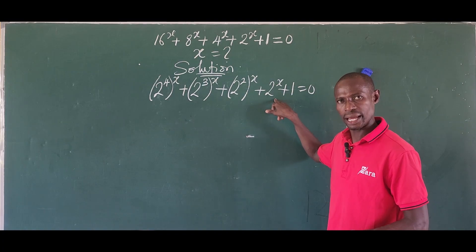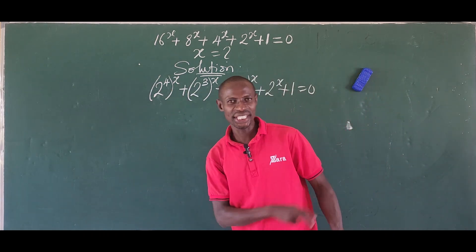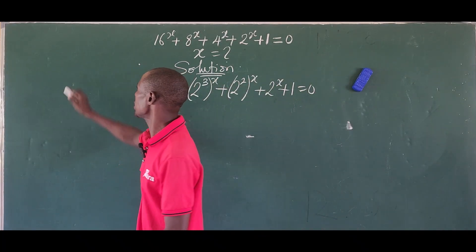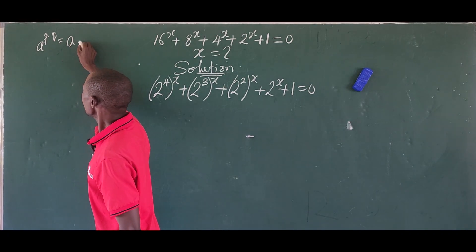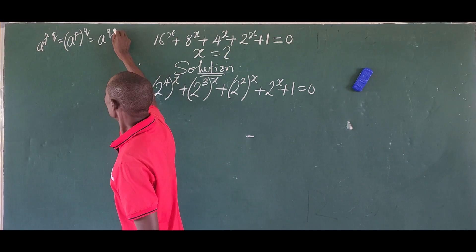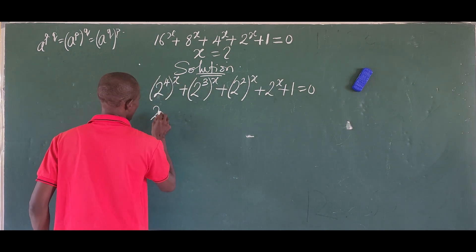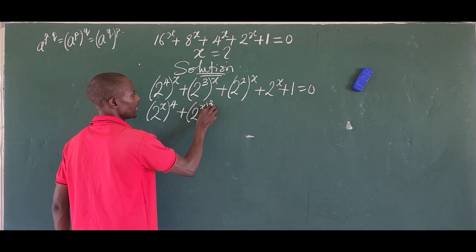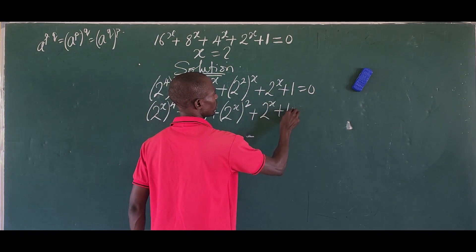We are having 2 to the power of x here. We want to push the x inside and push the outer figure outside. We apply a simple law in indices which says that a to the power of p·q can be written as a to the power of p, raised to q, or a to the power of q raised to p. So we interchange this: 2 to the power of x raised to 4, plus 2 to the power of x raised to 3, plus 2 to the power of x raised to 2, plus 2 to the power of x, plus 1, equal to 0.